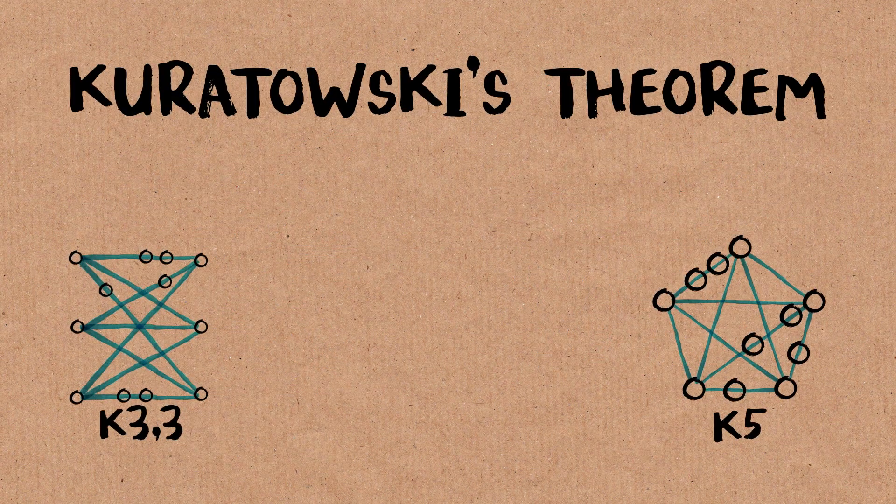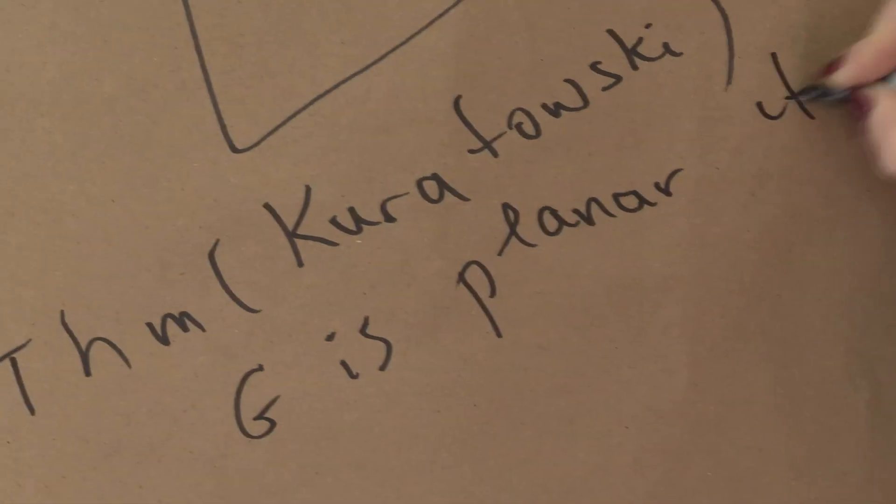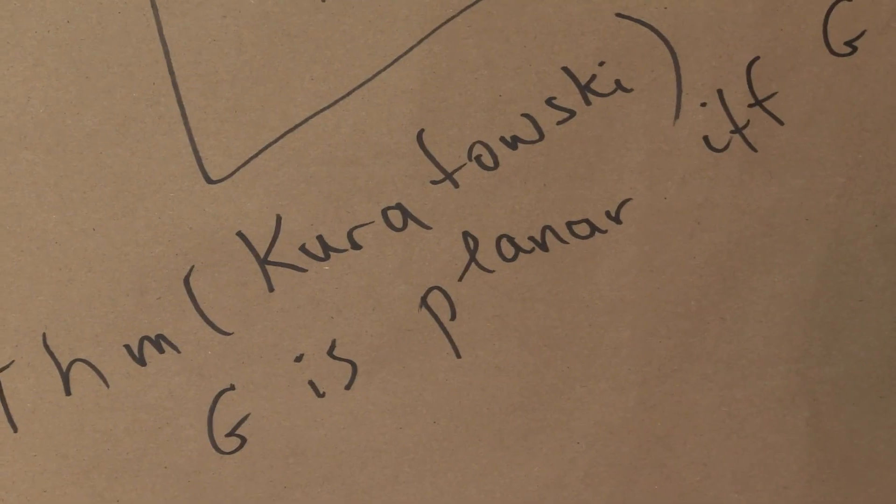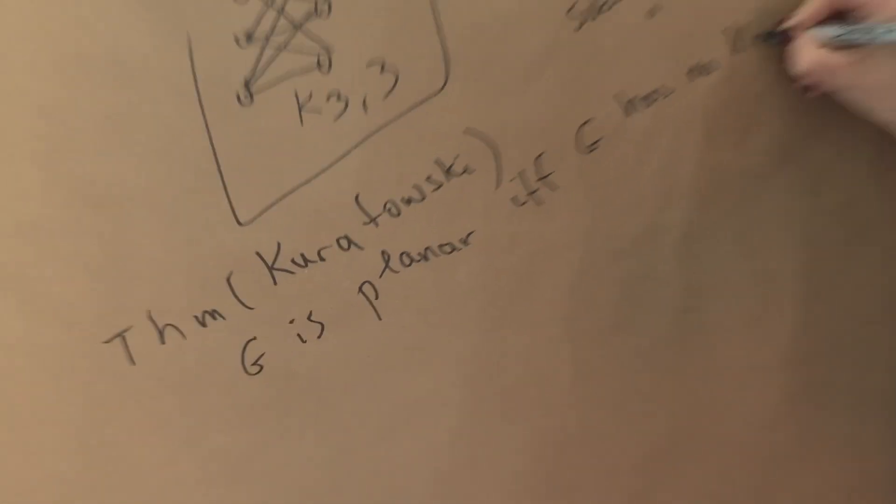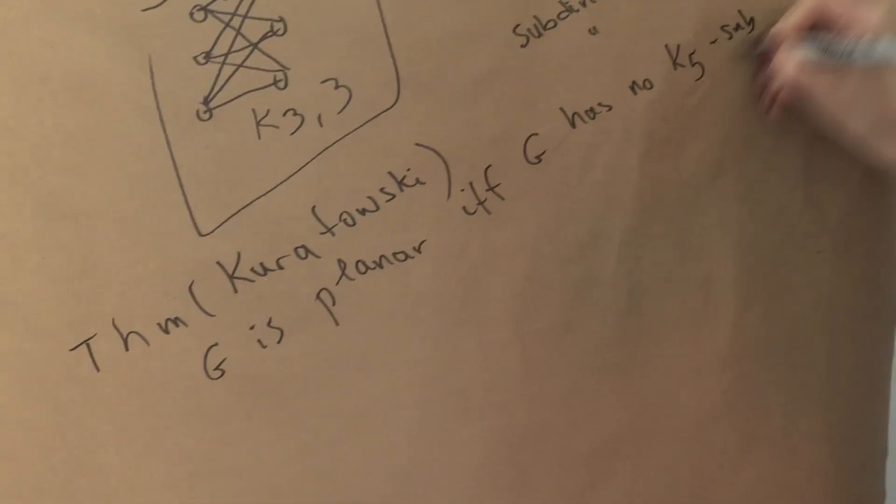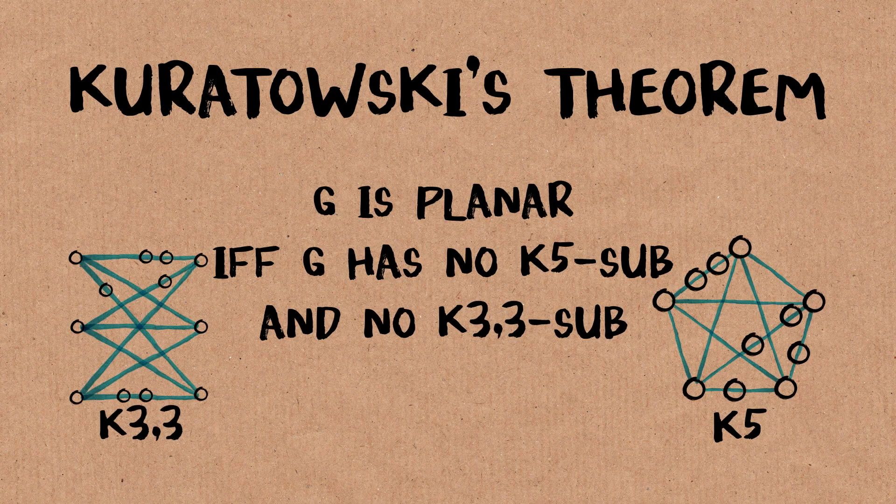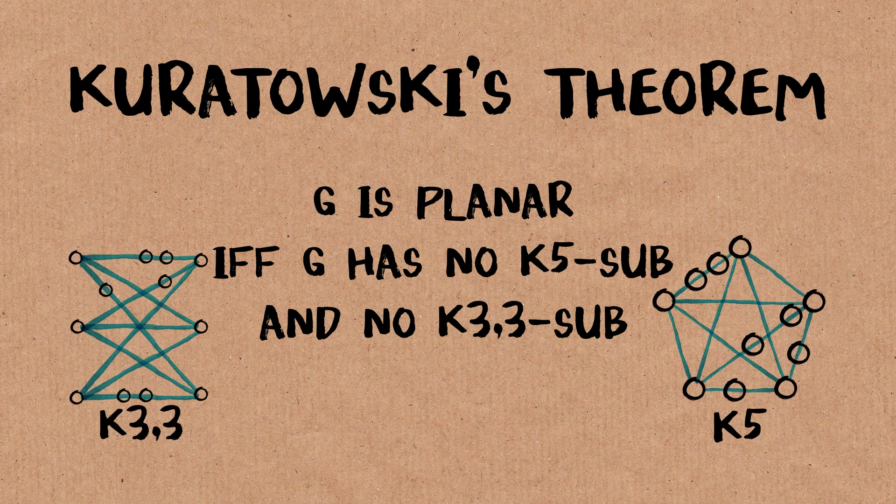So the theorem is, G is planar, if and only if G has no K5 subdivision and no K33. Wow.